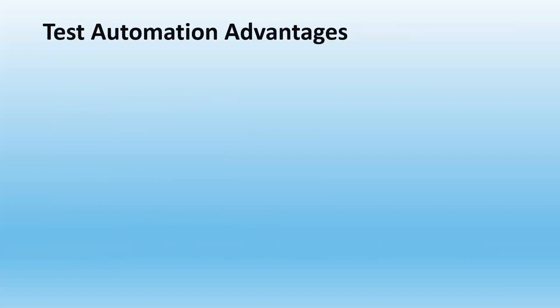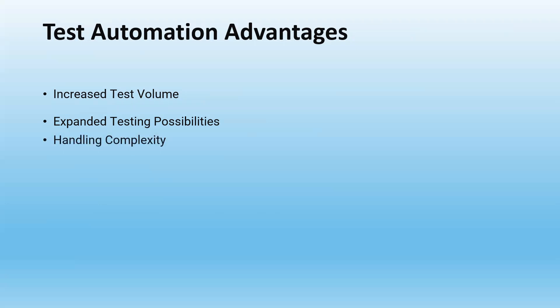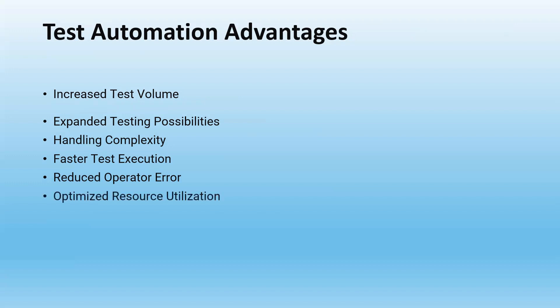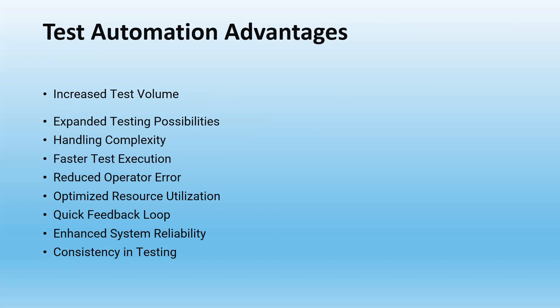Let's look at the advantages of doing test automation. We can increase the test volume — that's the main thing — and we can expand the testing possibilities. Also, we can handle complexity, speed up test execution, and reduce operational or human errors. We can optimize resource utilization both in terms of human resources and digital resources. We also get a quick feedback loop and can enhance system reliability and consistency in testing. These are the main advantages of doing test automation.